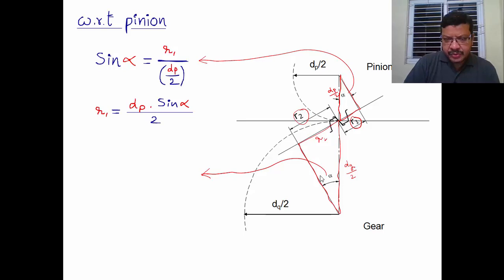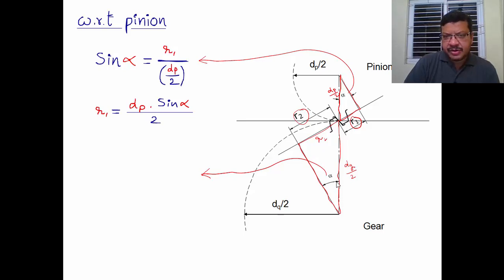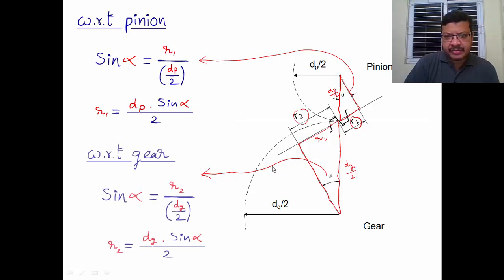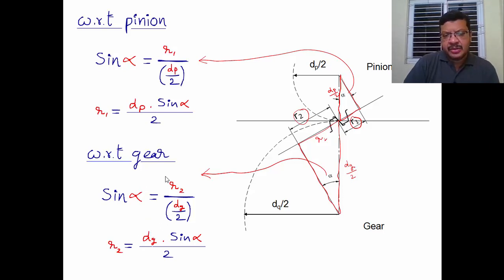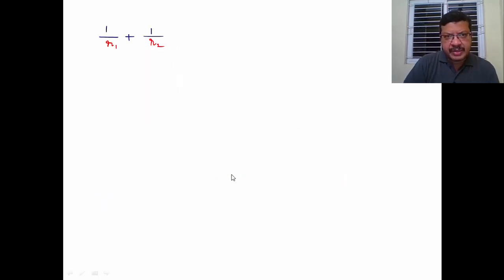Similarly, by constructing a right-angle triangle for the gear side, the radius of curvature R2 with respect to the gear gives sin α = R2 / (dg/2), from which R2 = dg·sin α / 2. Now R1 and R2 are both known. Our aim is to find 1/R1 + 1/R2.